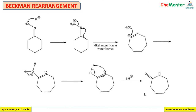To understand the formation of caprolactam starting from cyclohexanone, the same mechanism applies. In the first step, the oxime undergoes protonation; second, dehydration — nitrogen becomes positively charged. The carbon-carbon bond gets cleaved and a new bond between carbon and nitrogen is formed. Then nucleophilic attack takes place, followed by deprotonation and keto-enol tautomerism to give caprolactam.